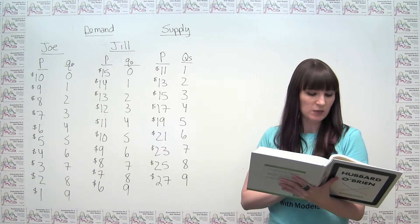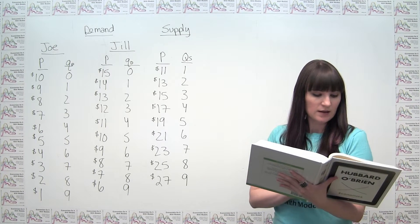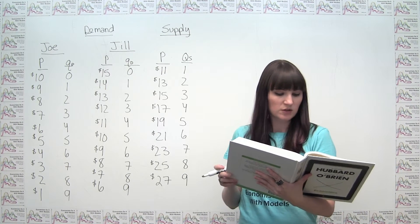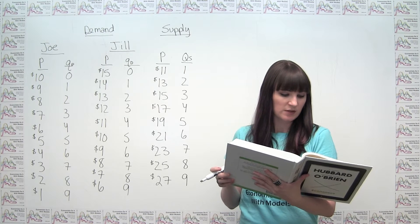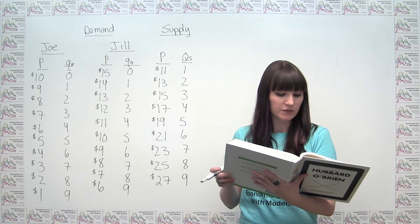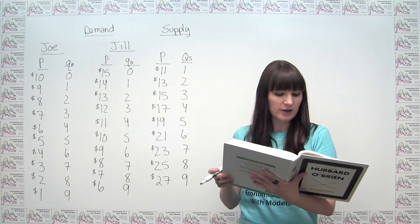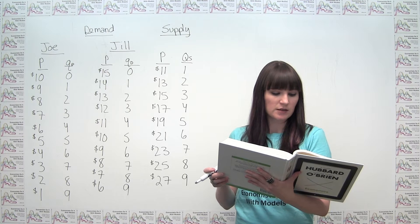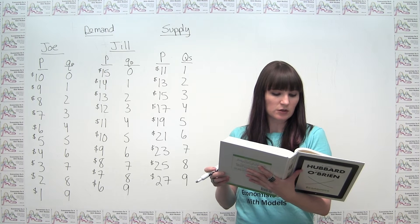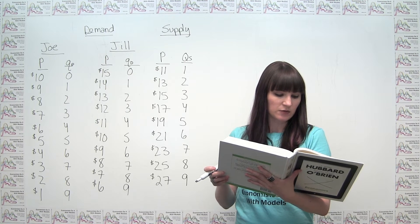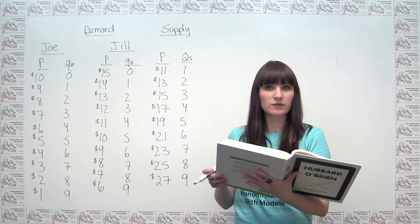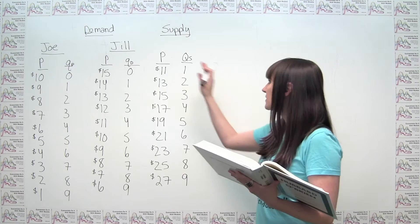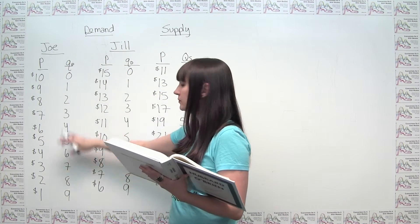The problem begins by saying: suppose that Jill and Joe are the only two people in the small town of Andover. Andover has land available to build a park of no more than nine acres. Jill and Joe's demand schedule for the park are as follows, and then we have this information here.